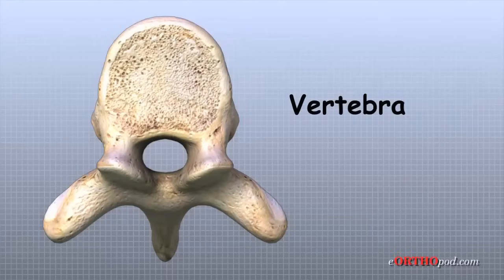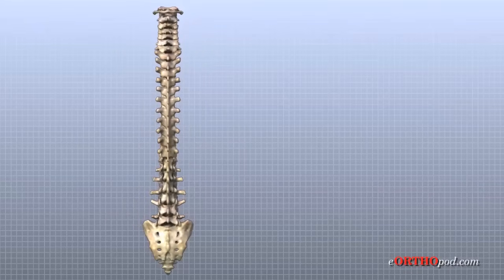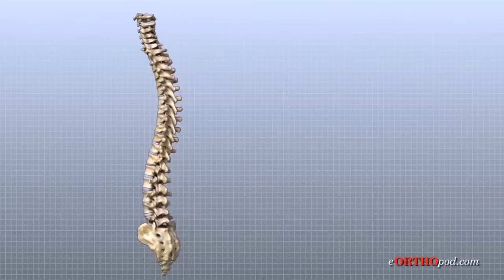The human spine is made up of 24 spinal bones called vertebra. The vertebra are stacked on top of one another to create the spinal column. The spinal column gives the body its main upright support.